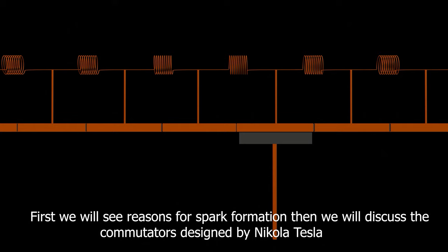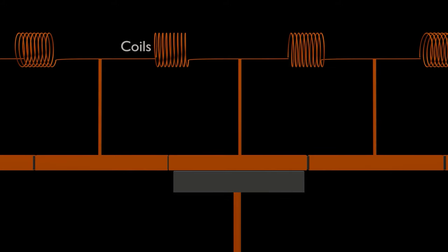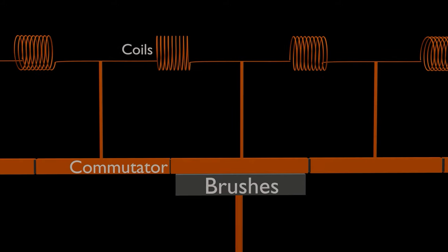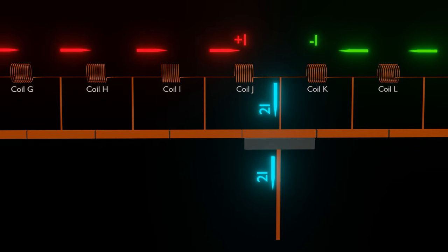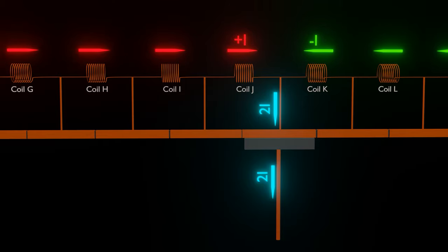First we will see the reason for spark formation, then we will discuss the commutator design of Nikola Tesla. Here we have coils, commutators, and brushes. In a DC machine, the commutator enables the reversal of current in a coil.